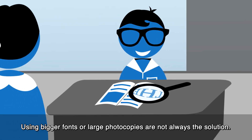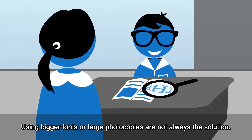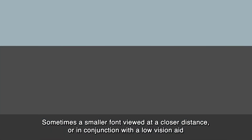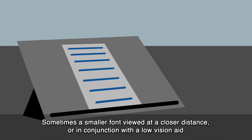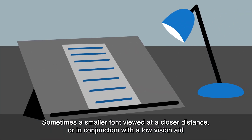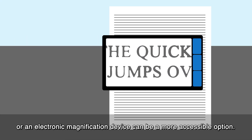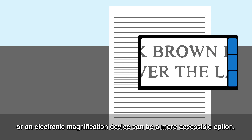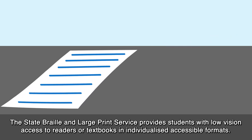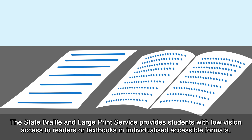Using bigger fonts or large photocopies are not always the solution. Sometimes a smaller font viewed at a closer distance, or in conjunction with a low vision aid or an electronic magnification device, can be a more accessible option. The State Braille and Large Print Service provides students with low vision access to readers or textbooks in individualised, accessible formats.